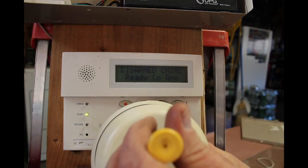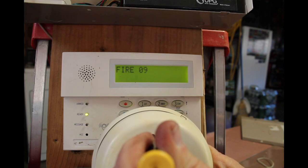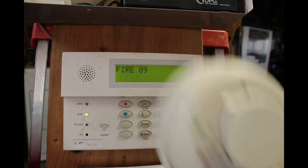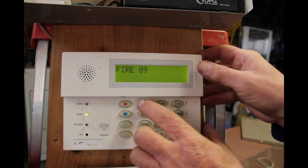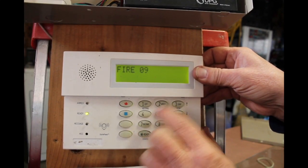So here we go. I'm going to push this in. Fire zone nine. That's the sounder. Now to shut that off: 1-2-3-4 off.